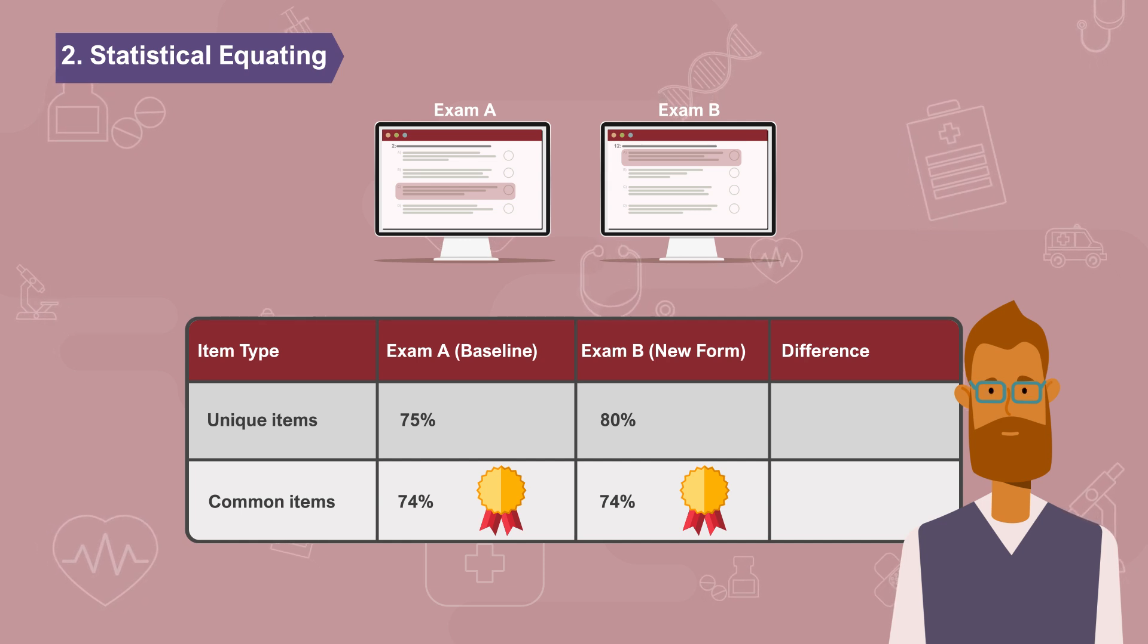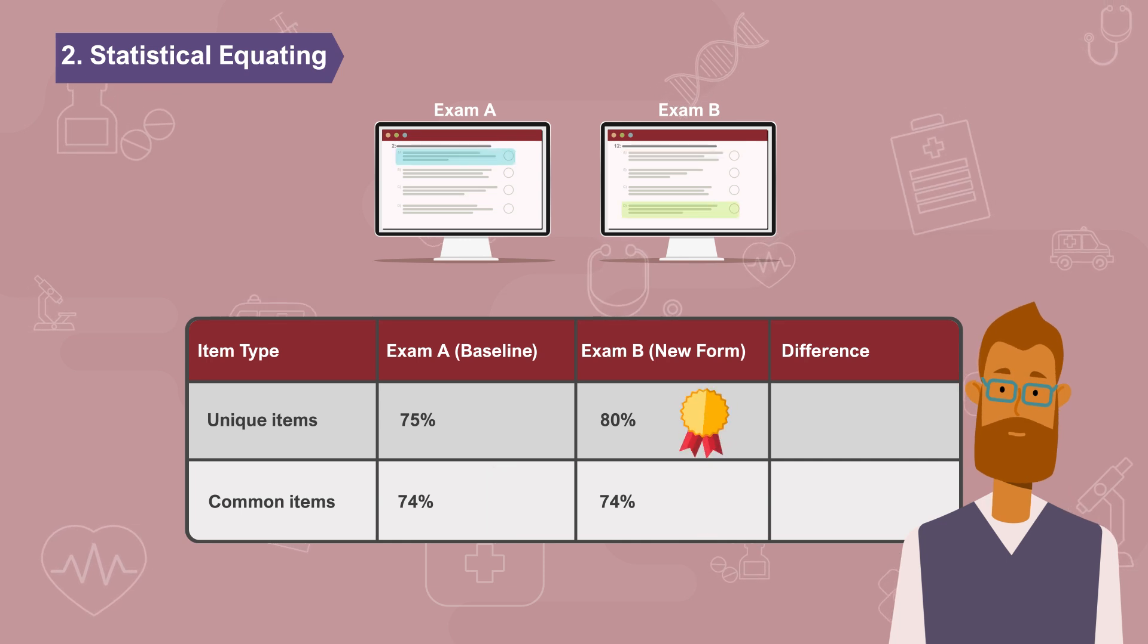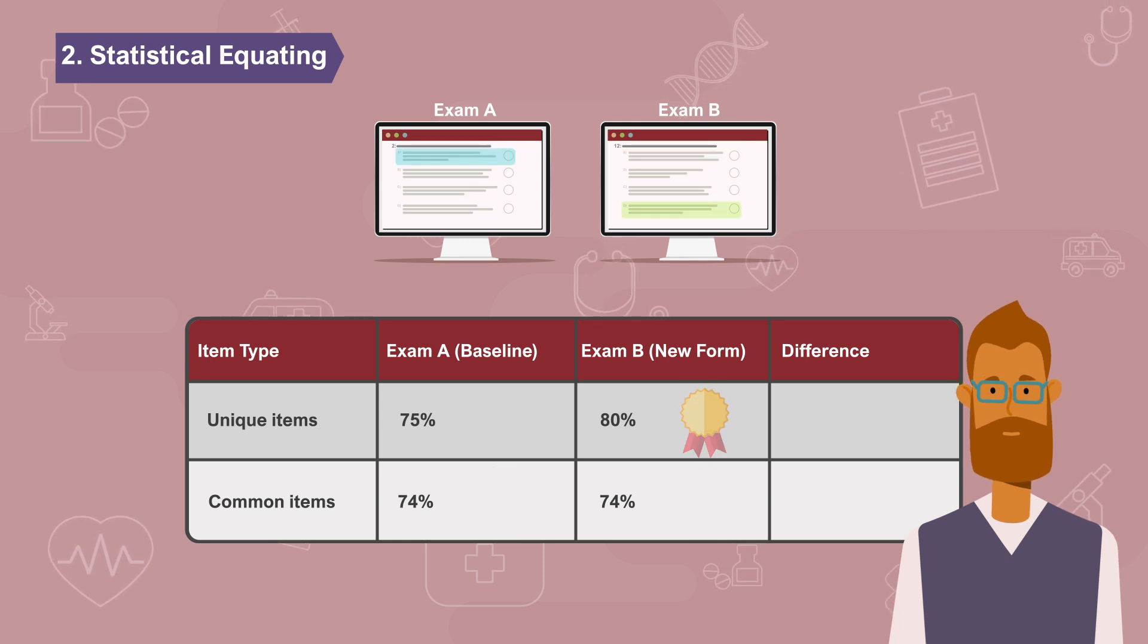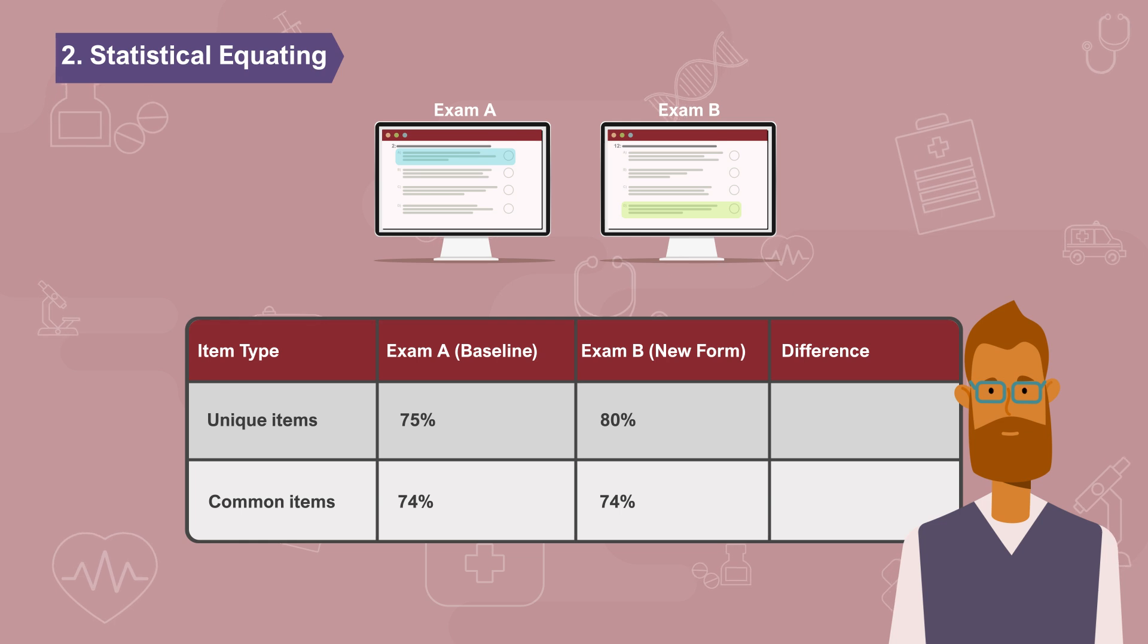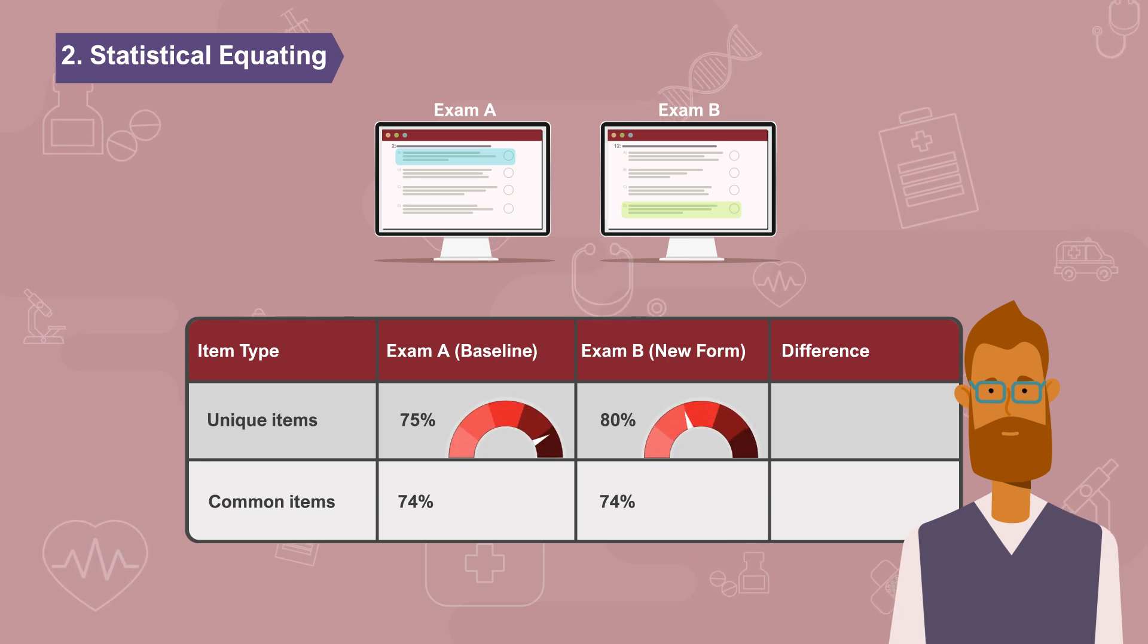Since both groups of candidates are equally strong, why did the group who took exam B do better on the unique questions? It is because the set of unique questions on exam B were easier than the set of unique questions on exam A.